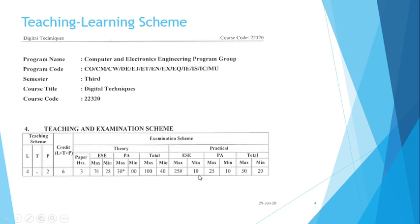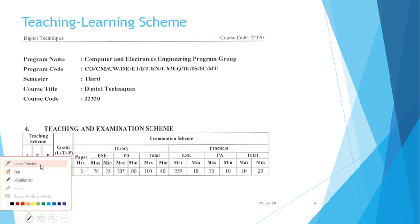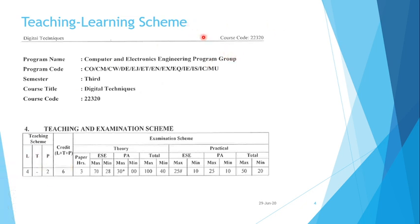The course code is 22320 — Digital Techniques — and this subject is common for both Computer Engineering and Electronics Engineering groups (CO and EJ) in the third semester. This is the teaching and examination scheme, which we'll cover in upcoming lectures.